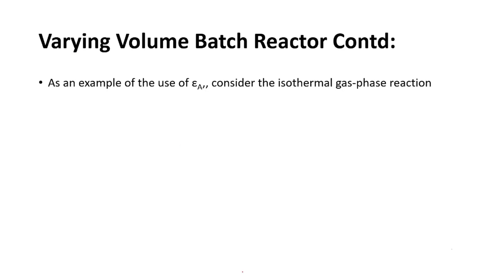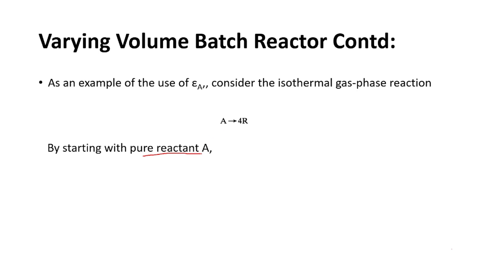Let us see an example to calculate εa. We consider an isothermal gas-phase reaction: A → 4R, where A is the reactant and R is the product. We take the important assumption that we are using only pure reactant A — meaning only a single species is present in the feed, with no other mixture or species.